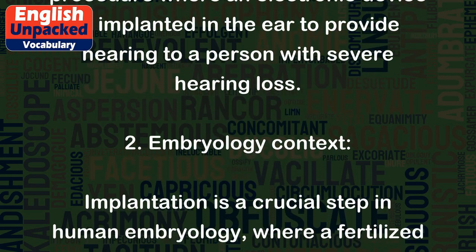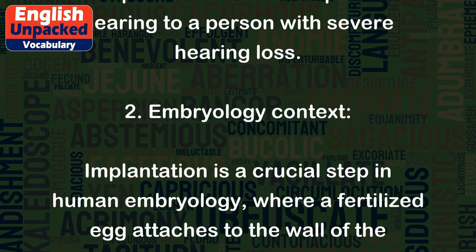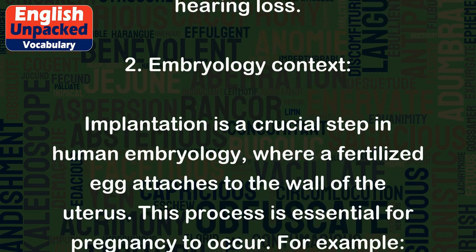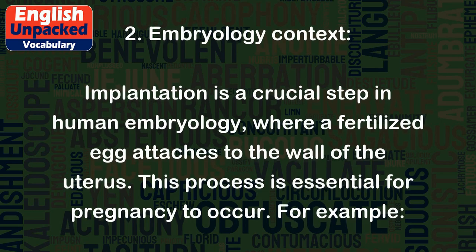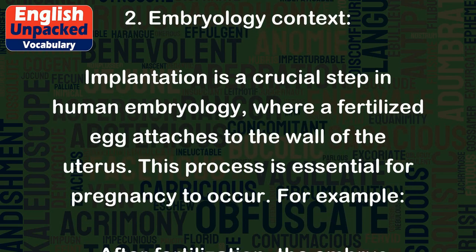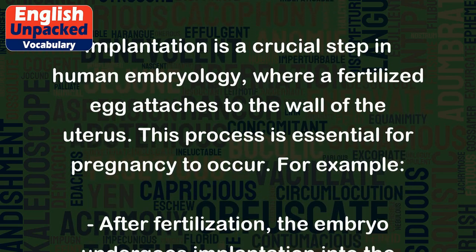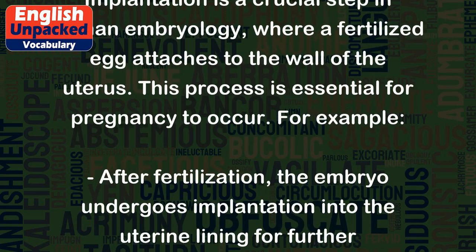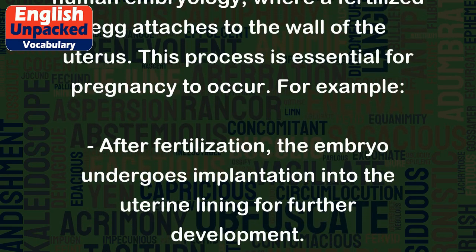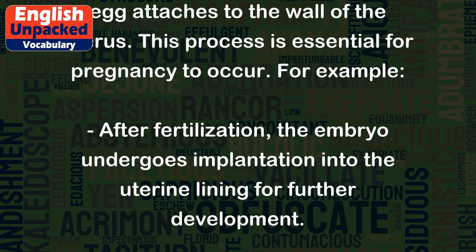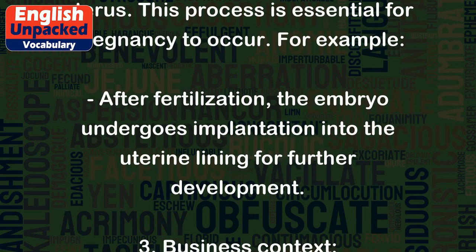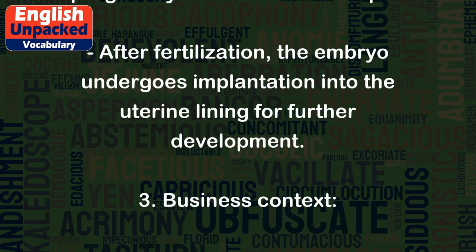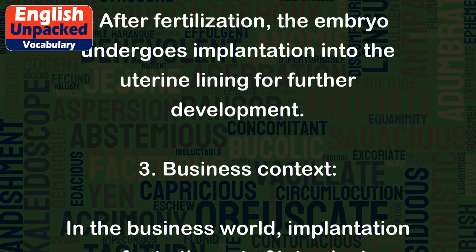Implantation is also a crucial step in human embryology, where a fertilized egg attaches to the wall of the uterus. This process is essential for pregnancy to occur. For example, after fertilization, the embryo undergoes implantation into the uterine lining for further development.